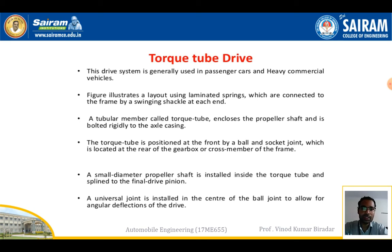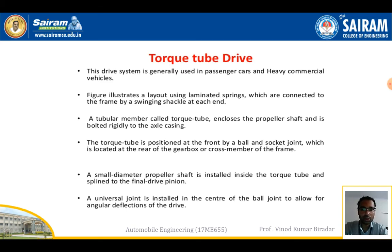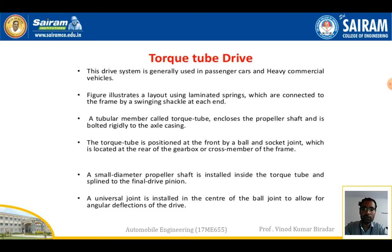The torque tube is fixed at the front by a ball and socket joint located at the rear of the gearbox cross member of the frame. A small diameter propeller shaft is installed inside the torque tube and splined to the final drive pinion, allowing the final drive to rotate. A universal joint is installed at the center of the ball joint to allow angular deflection of the drive.